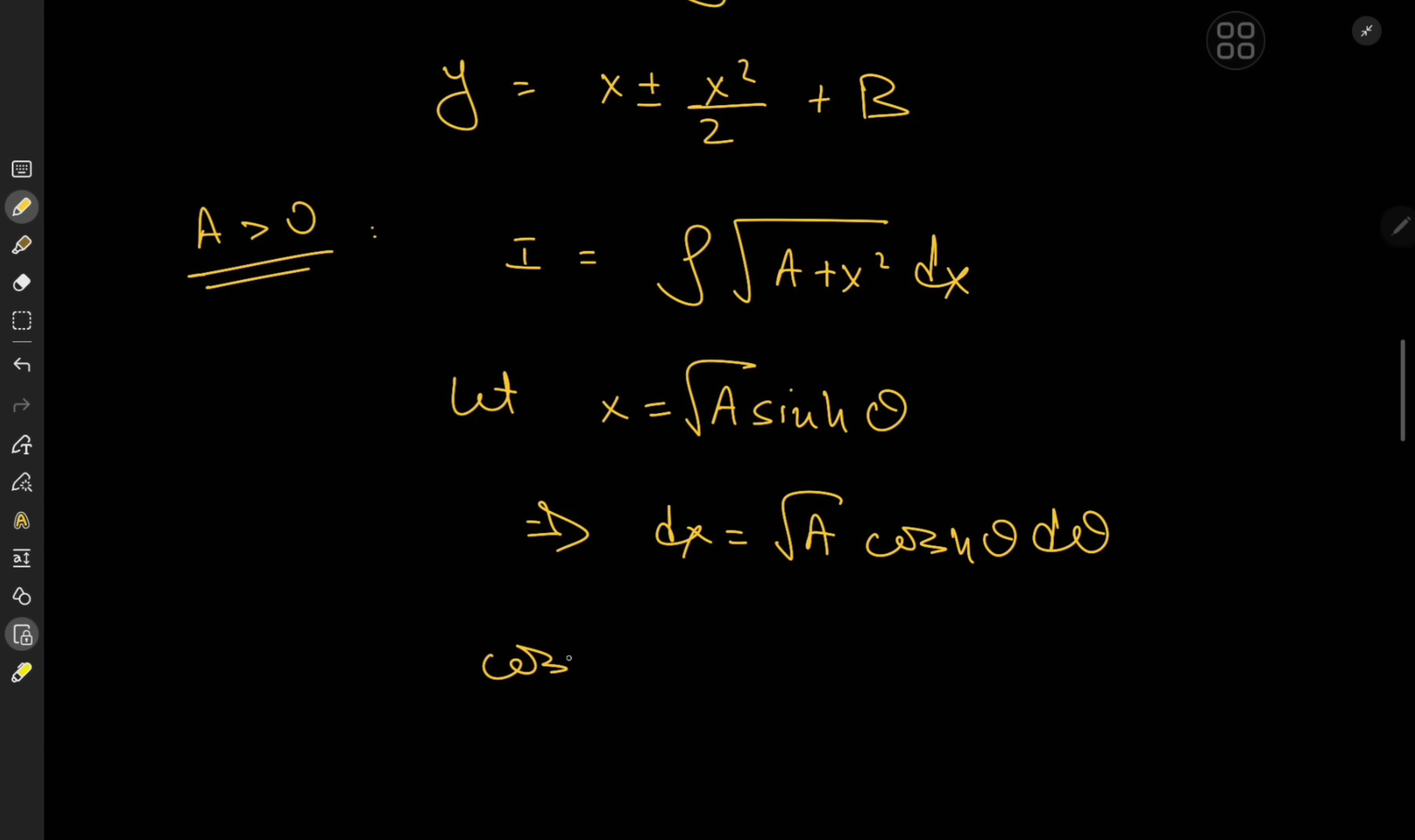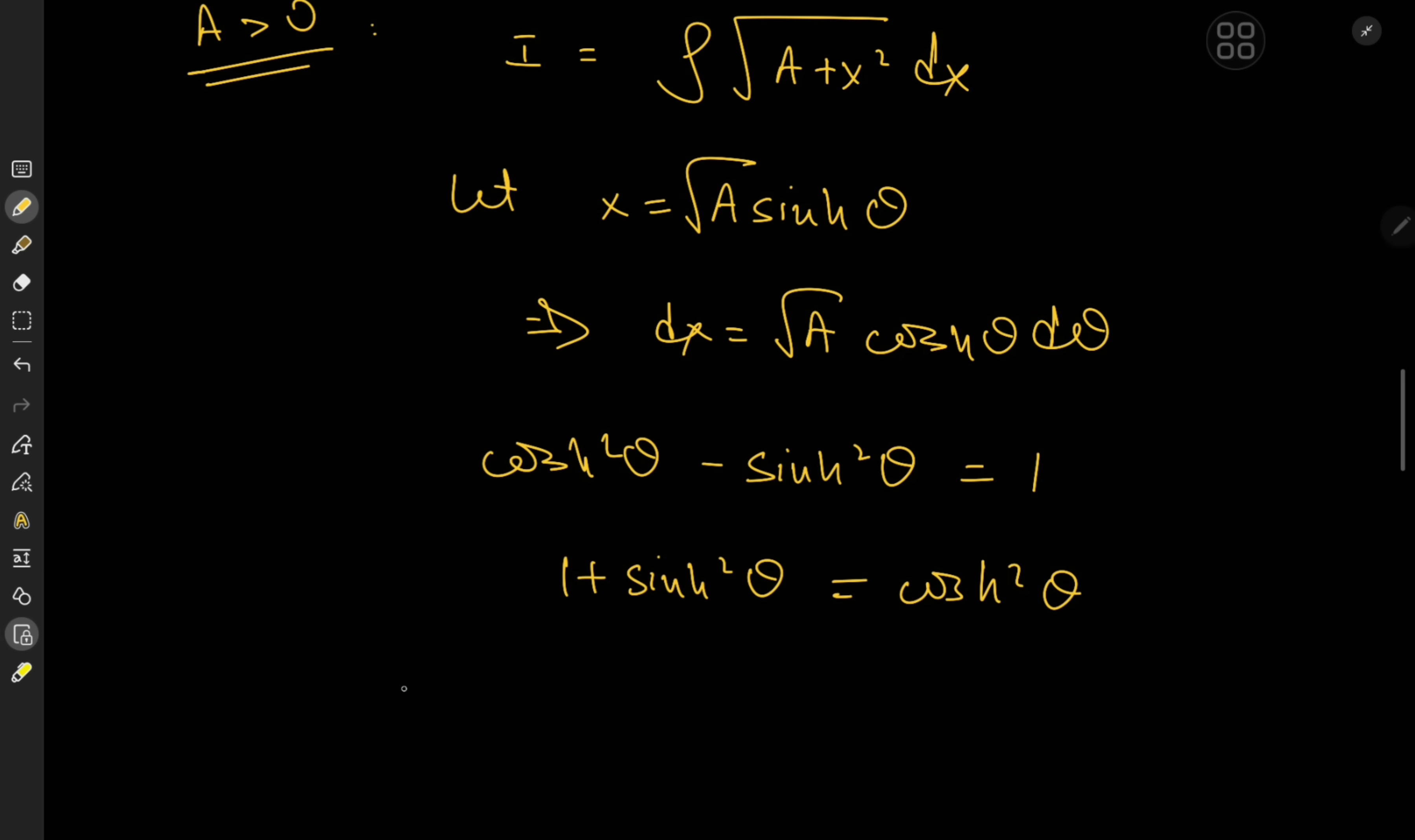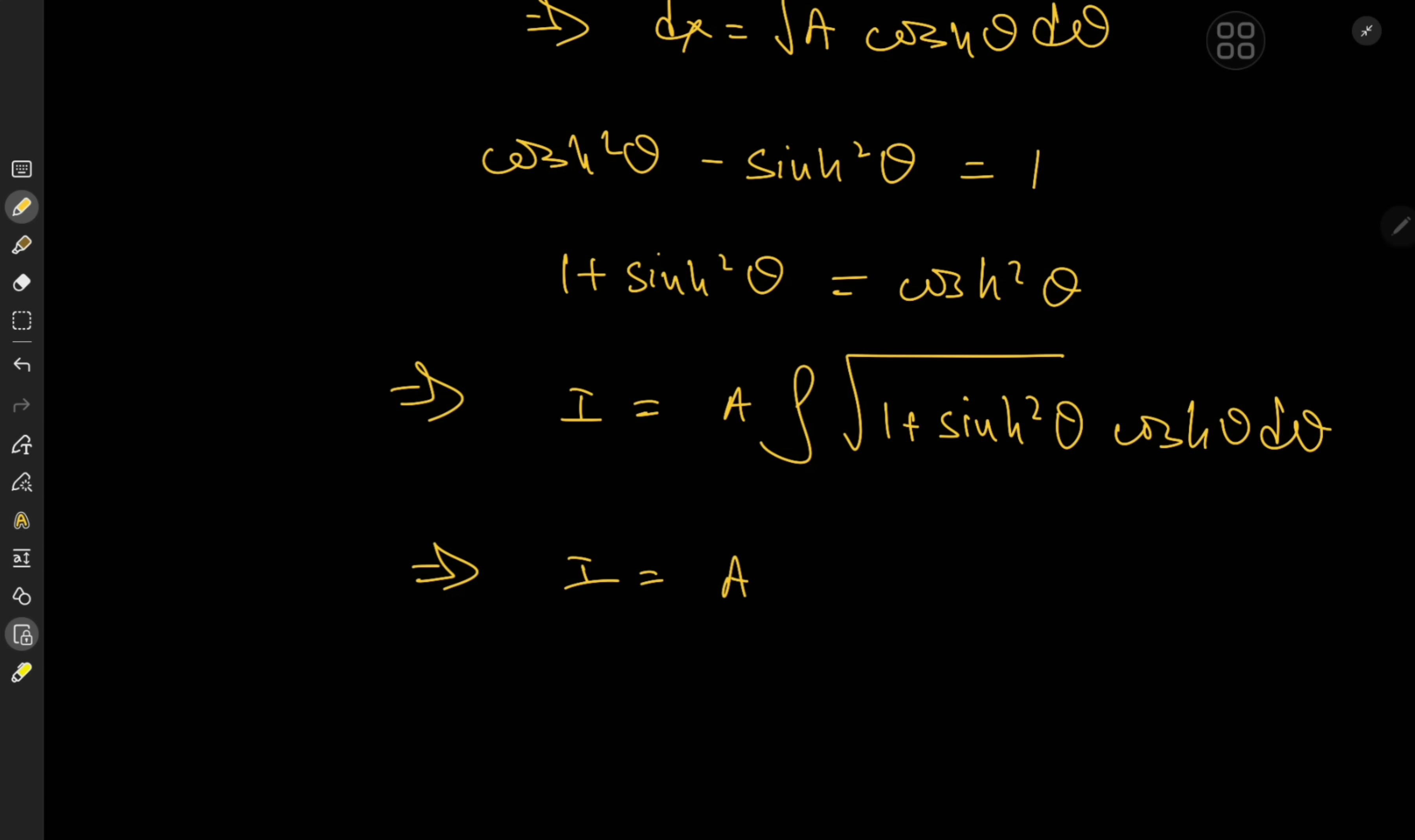And of course we know that cosh² theta - sinh² theta is equal to 1. So what we have here is a 1 + sinh² theta scenario that equals cosh² theta when we factor out the √a term. So this implies that I here is now √a factored out, but you have another √a because of the differential element. That means you're left with a factor outside, integral of √(1 + sinh² theta) times cosh theta d theta, which implies that I is now just a times the integral of cosh² theta d theta.